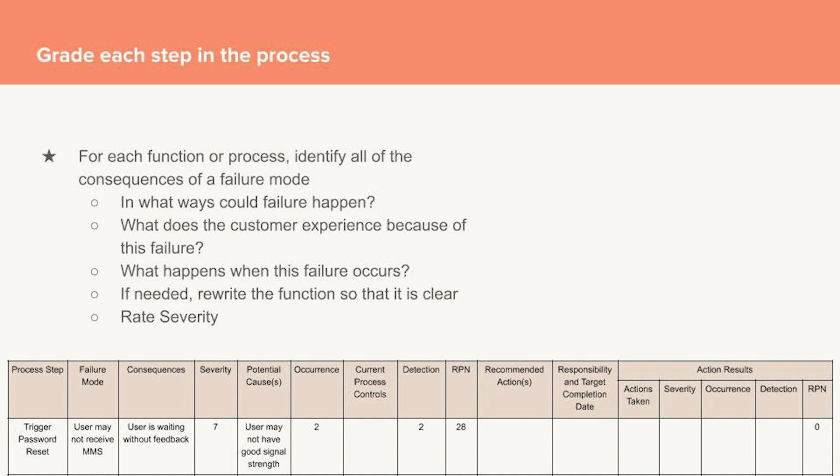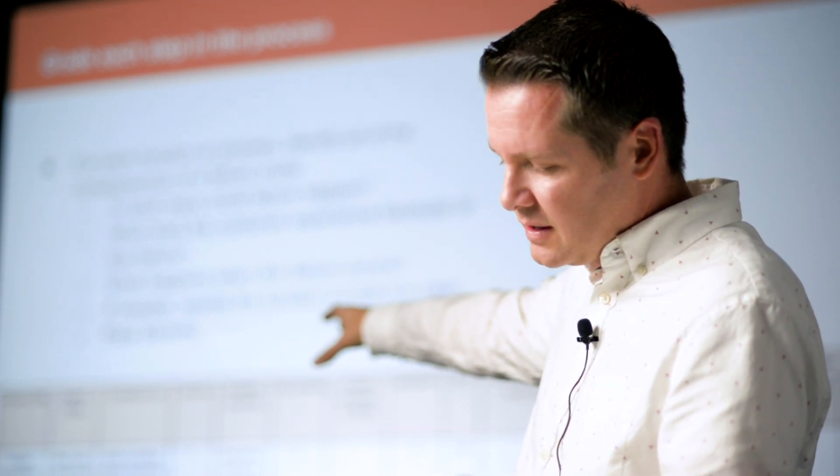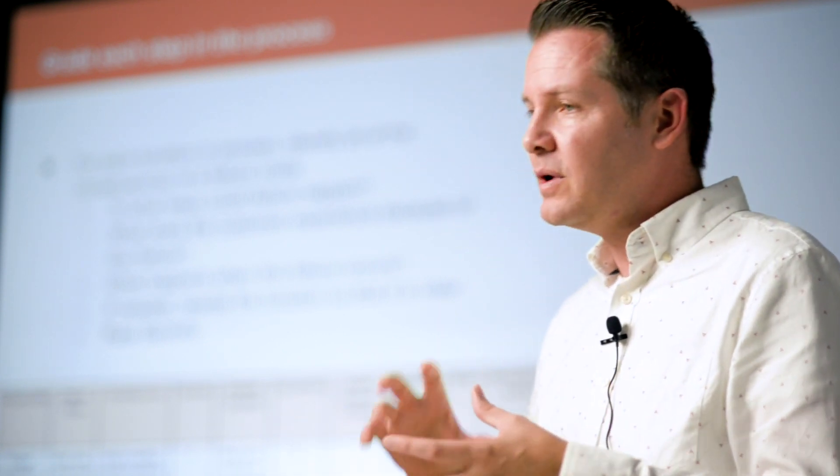This is the type of form—if you Google this there's a lot of examples out there. This is the core: you have the step in question or the process, the way it can fail, consequences, severity, causes, etc. As you're going through that, when we're looking at the consequences, we're asking ourselves: in what way could failure happen?